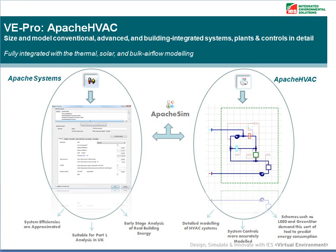Apache Systems allows you to create simple system representations in the Apache Systems dialog, allowing the input of seasonal energy efficiencies for heating and cooling plant, as well as auxiliary energy values to represent the power consumed by pumps, fans and controls, so the system efficiencies are approximated.